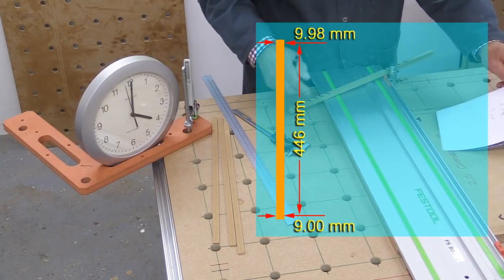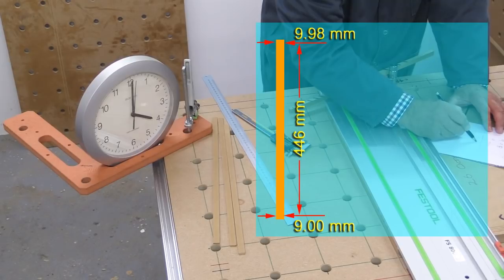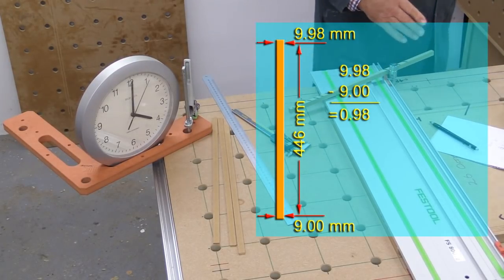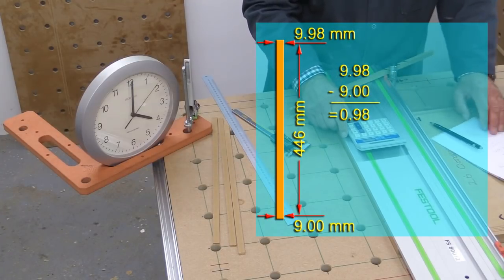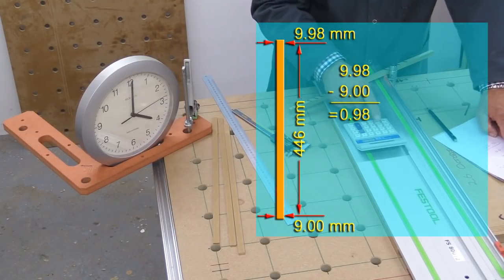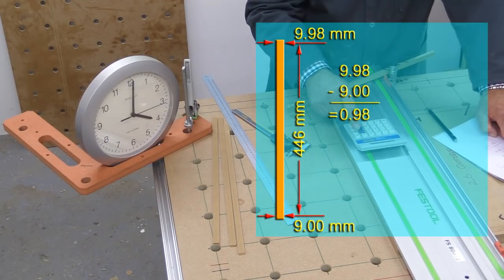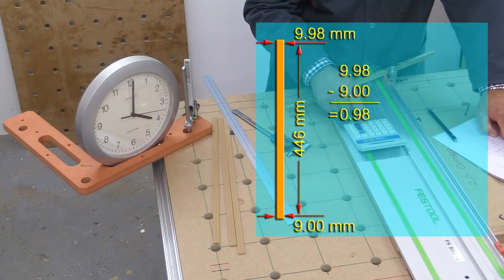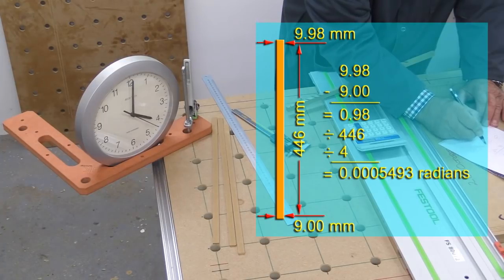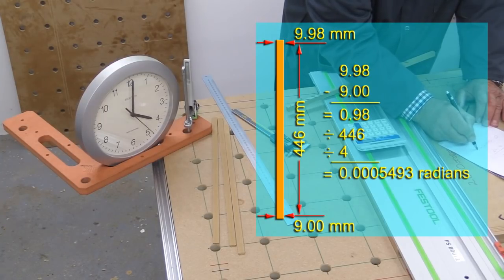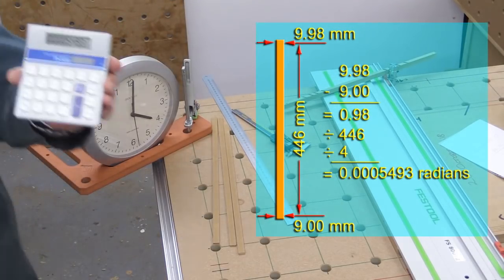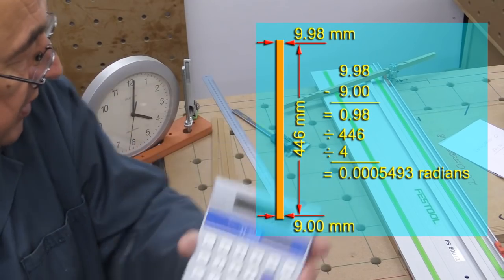So, what I now have to do is to take one away from the other and it makes 0.98. Then I need my calculator and I have to then take 0.98, divide it by the length, which was 446, and then divide by 4. And that equals 0.00005493. So, that's what that equals there. Now, that's that calculation.